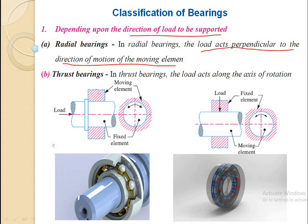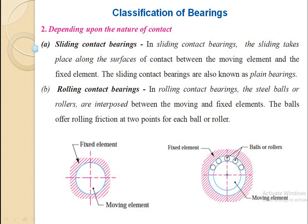In thrust bearings, the load acts along the axis of rotation, whereas in radial bearings the load acts perpendicular to the axis of rotation. This is the key difference between radial bearings and thrust bearings depending upon the direction of load to be supported. The next classification is depending upon the nature of contact between the bearing and the moving element.